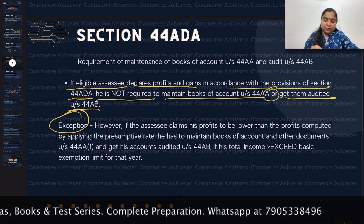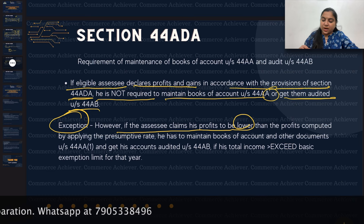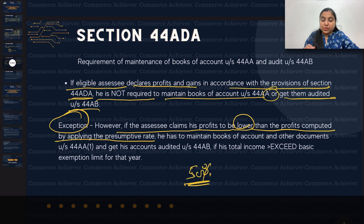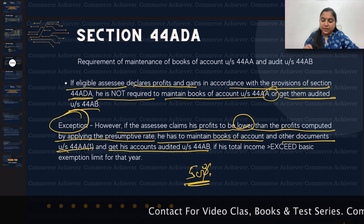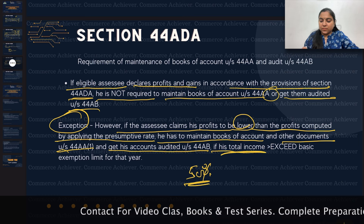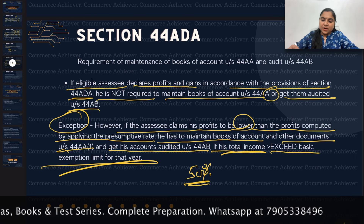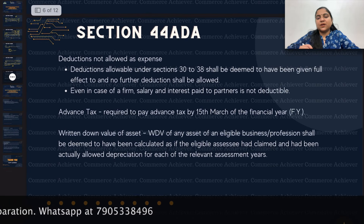Exception: However, if the assessee claims his profit to be lower — agar usne kam profit dikhi hai — then the profit computed by applying the presumptive rate at 50%, if he has shown lower profit than that, then he has to maintain books of account under Section 44AA sub-clause 1 and get his accounts audited under 44AB, if his total income exceeds the basic exemption limit of that particular year.